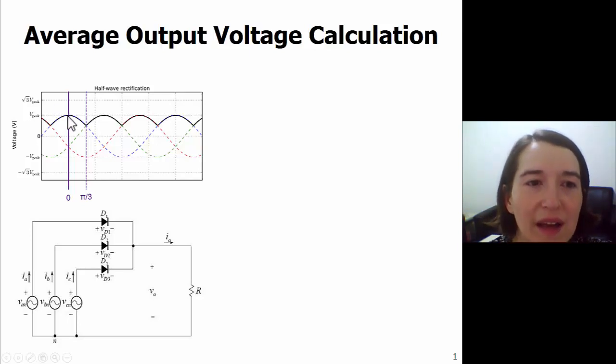So we notice that this part is all we have to integrate over, and this is one-sixth of the period, so two pi over six or pi over three.